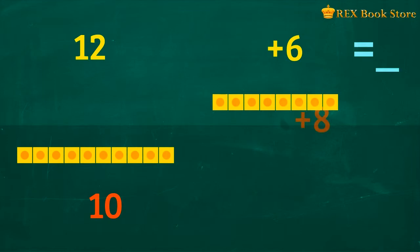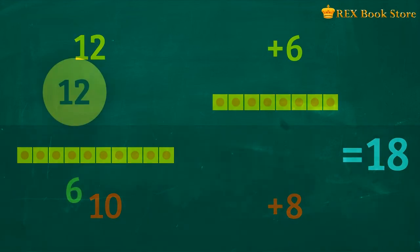Now we have two groups, 10 units and 8 units. 12 plus 6 is equal to 10 plus 8. 10 plus 8 is equal to 18. So 12 plus 6 is equal to 18.